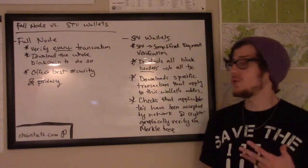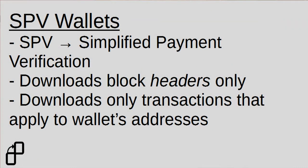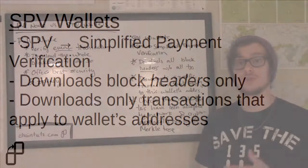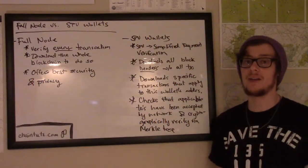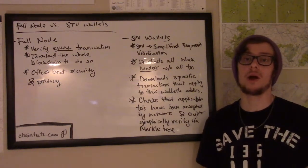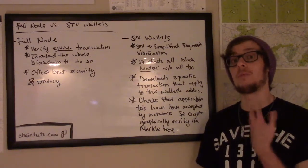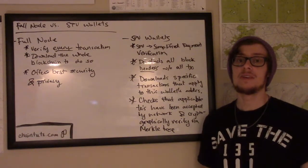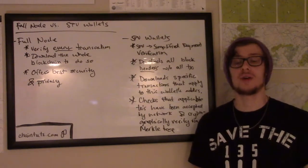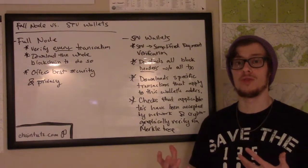Now since these wallets only download the block headers, they'll still have to download some transaction data specific to the addresses that are included in that wallet, to verify that payments spent to the user's addresses are indeed valid. What SPV wallets do is they contact other full nodes and SPV nodes on the network and ask for transaction data that applies to these addresses. This does introduce a little bit more of a privacy risk because you're asking for data that specifically pertains to your addresses.